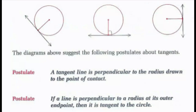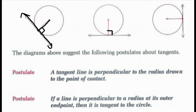With tangent lines, there are two postulates. The first: a tangent line is perpendicular to the radius drawn to the point of contact. The second: if a line is perpendicular to a radius at its outer endpoint, then it's tangent to the circle. The second postulate is essentially the converse of the first — if a line is perpendicular to the radius at its outer endpoint, then it is tangent to the circle.